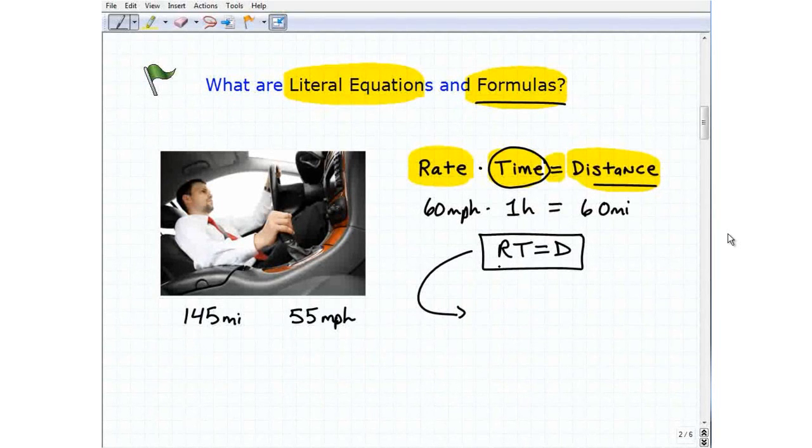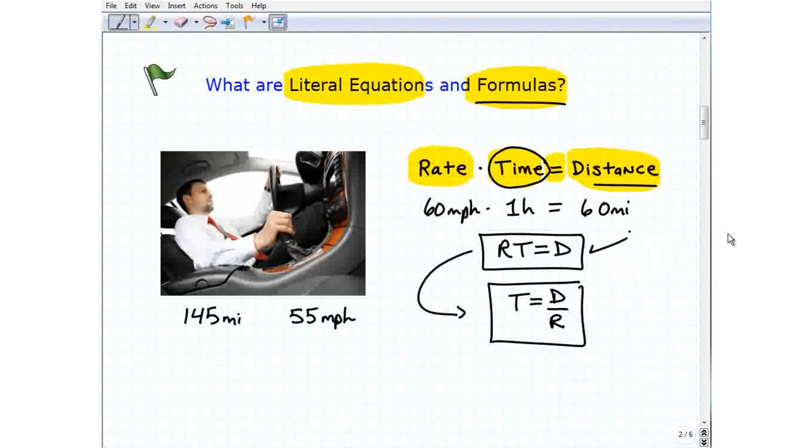But if I want to use this formula and solve for time, I want to basically solve for the t in this equation. So that would look like this, t equals d over r. So taking a formula, an equation, and rewriting it in terms of another variable, as in this case we were solving for d, in this case we were solving for t, is the whole essence of what we're studying in this particular lesson. That's what we mean by solving these literal equations and formula for a given variable.